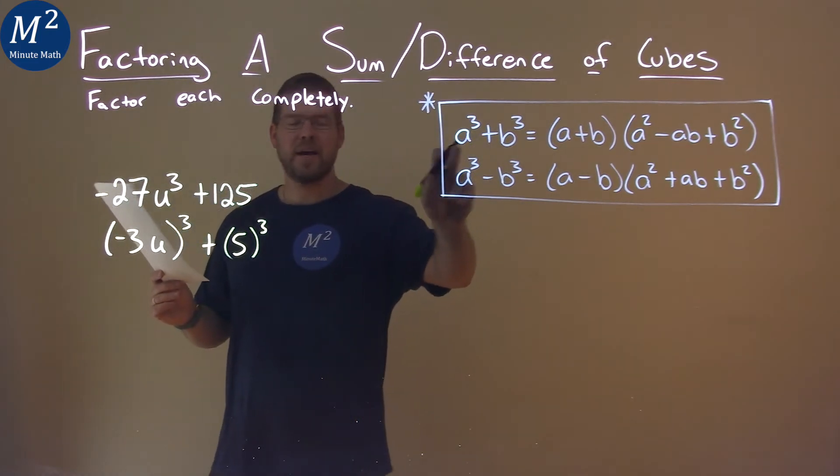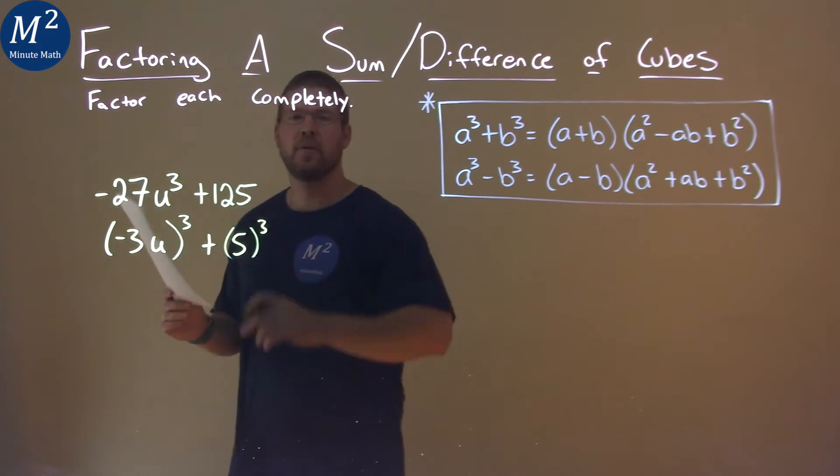So we use that, our a value is negative 3u and b value is 5, and let's use our formula.